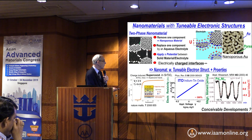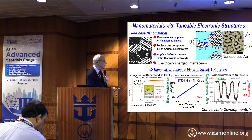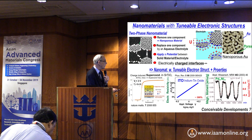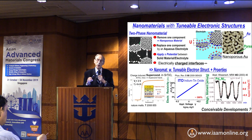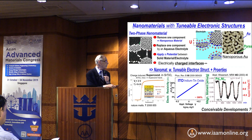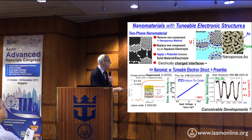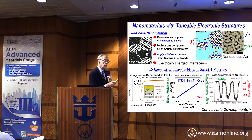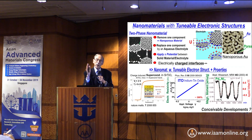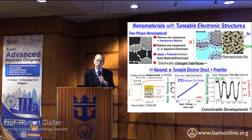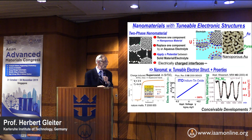Since about 50% of the atoms sit at these interfaces, we can manipulate the electronic structure of the white atoms between half and one electron charge. That means we can shift them electronically in the periodic table one position to the right and one to the left — and that changes their properties dramatically.